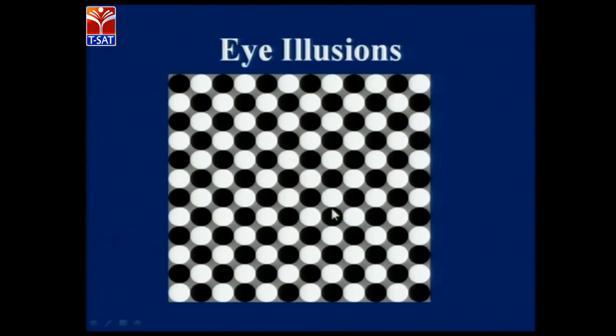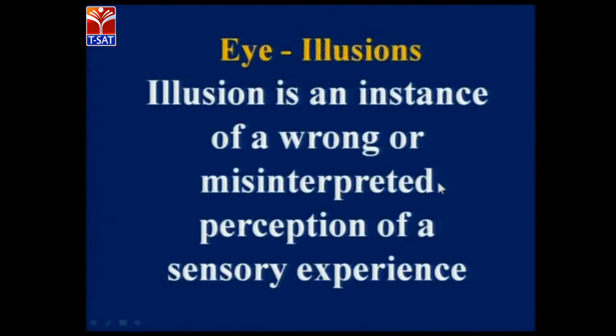Now, eye illusions — see this: you find it as if it is moving. Can you see anything in the center? Suddenly if you look you can see some numbers, or if you do not concentrate you cannot find them and you see rays coming out. This is illusion. Next, if you see these dots — concentrate on the white and dark circles — you find grey circles in between, but really the grey circles are not there. This is all because of illusion. Illusion is an instance of a wrong or misinterpreted perception of a sensory experience.